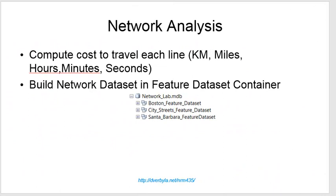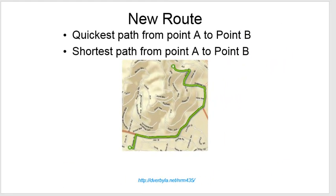The typical sequence starts with lines representing connected networks. For every line, we calculate the cost to travel it — either in terms of distance, such as kilometers walked or miles driven, or in terms of time, such as hours to walk or minutes to drive each line. Once we calculate the costs, we build a network dataset in our feature dataset by right-clicking on the feature dataset, then selecting New and then New Network Dataset. In the next video session, we'll start doing what we'll do in lab this week: making a new route to find the quickest path from point A to point B, and the shortest path from point A to point B.